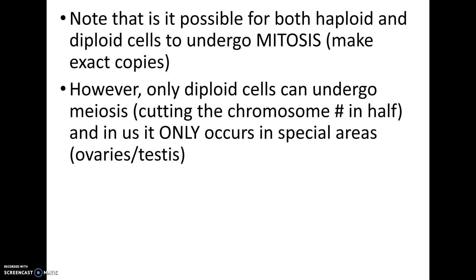Any cell can undergo mitosis as long as chromosomes have gone through S phase and are X-shaped. However, only diploid cells can undergo meiosis, because meiosis cuts the chromosome number in half — and you have to be diploid for that to happen.